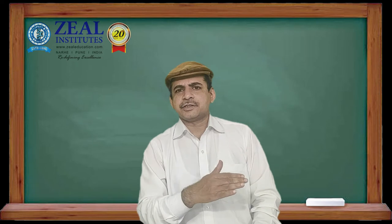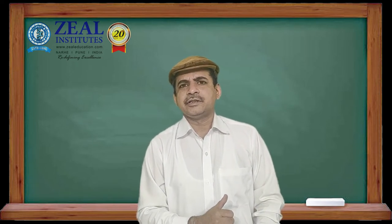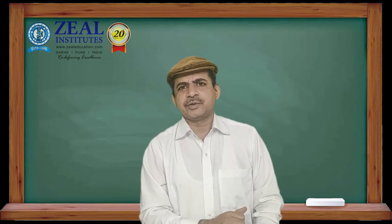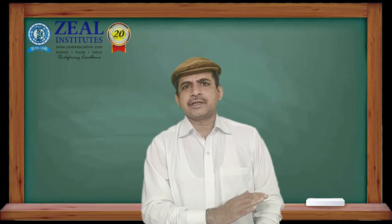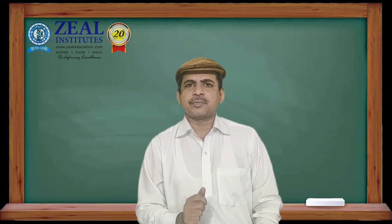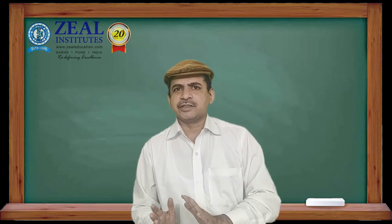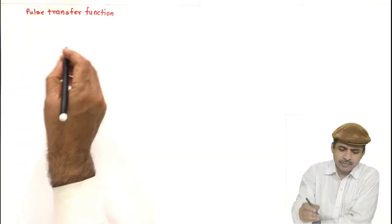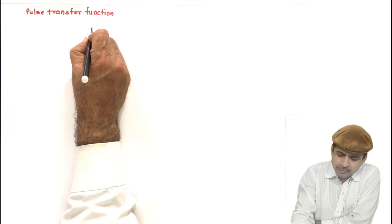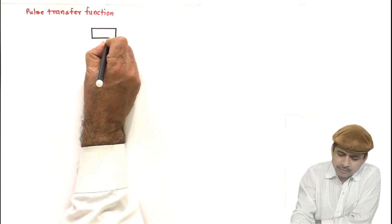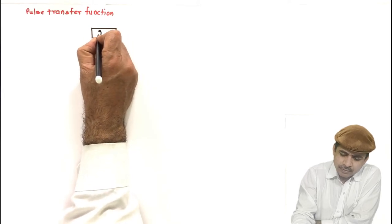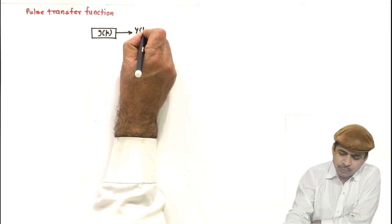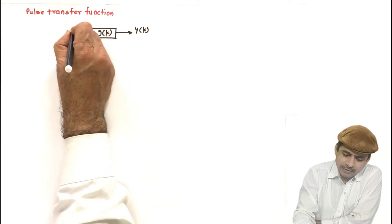Welcome back. In the previous three to four lectures we have reviewed the z-transform, inverse z-transform, and its application for solving difference equations. Today we will take one step ahead and see the concept of pulse transfer function, which is analogous to the transfer function applicable for continuous time systems. Let us consider a system with impulse response g of k — a discrete time system producing output y of k upon applying input r of k.